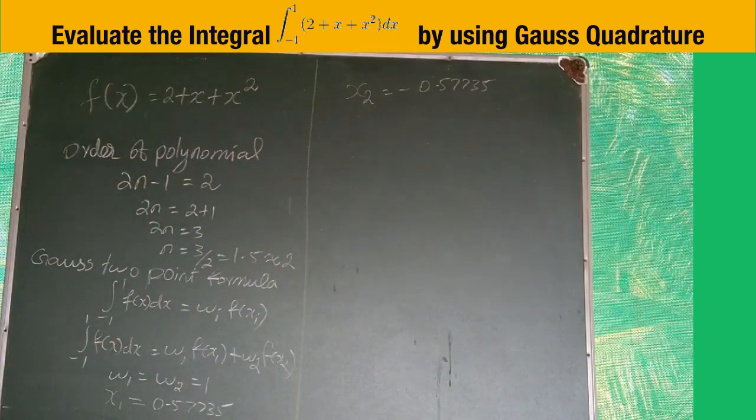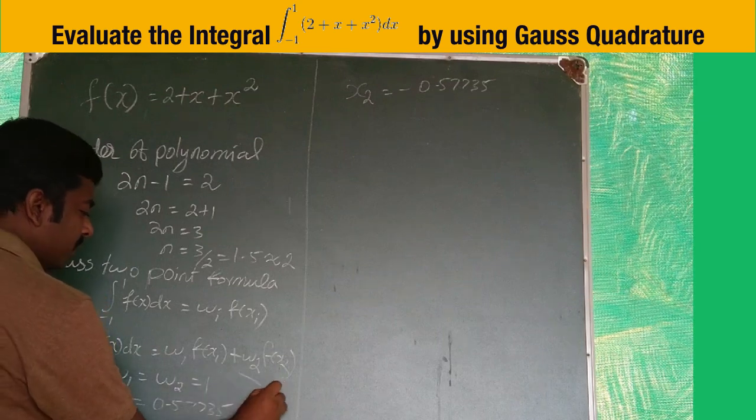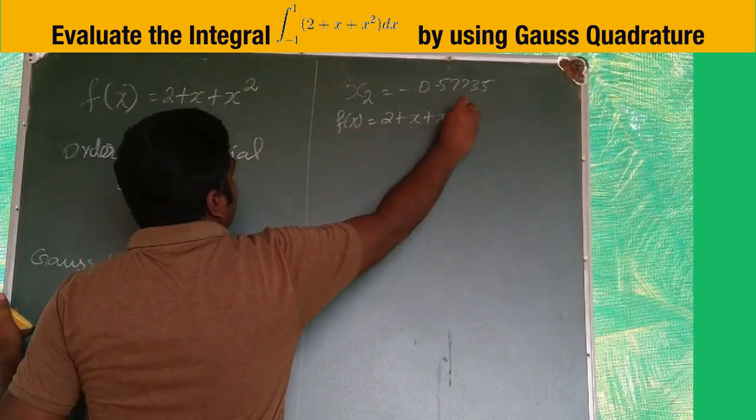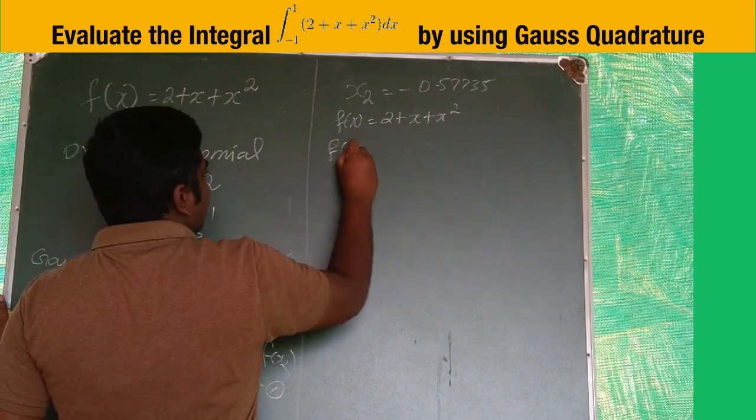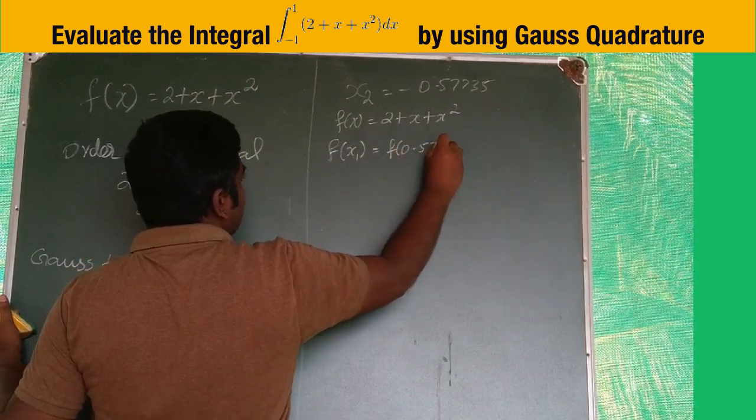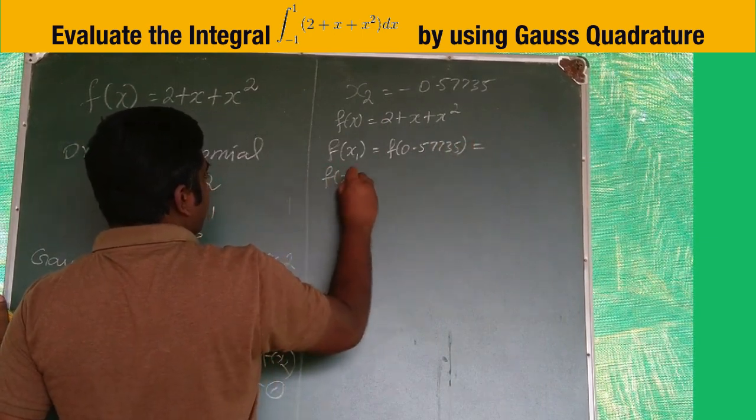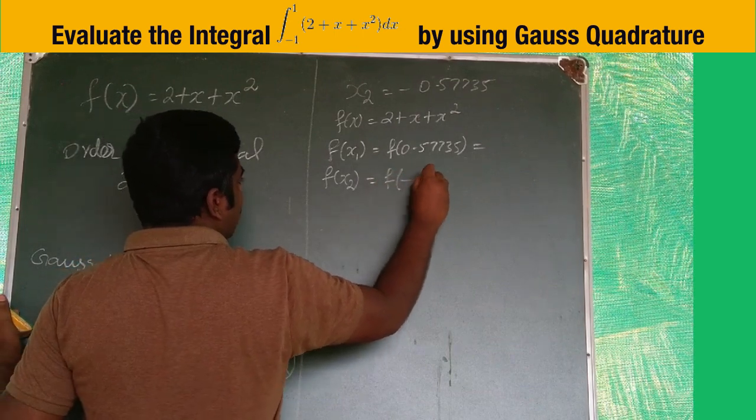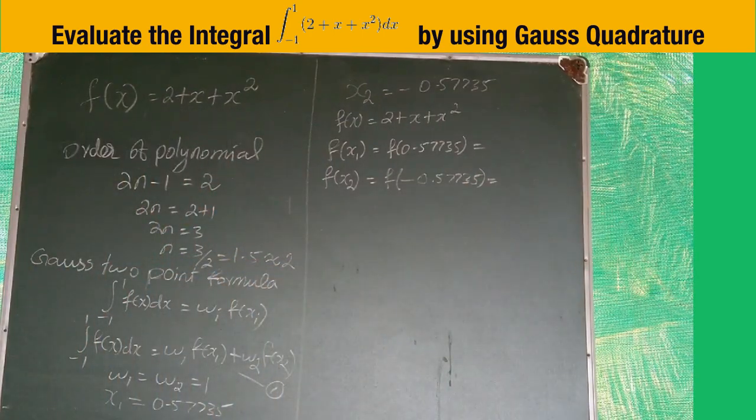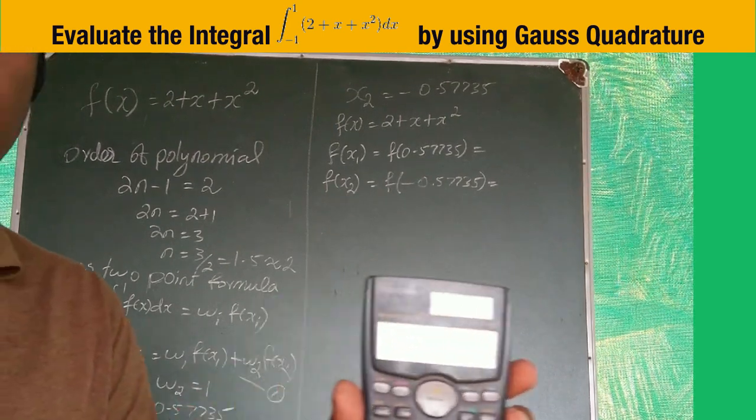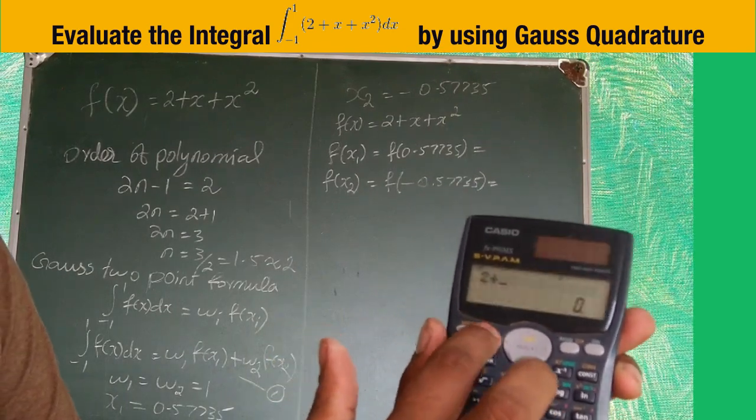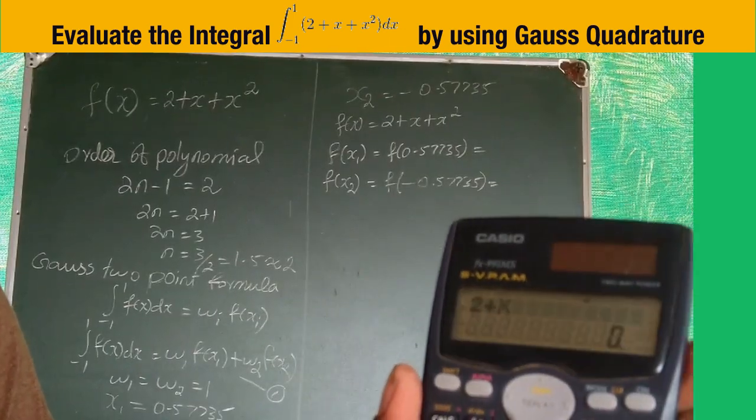Substitute these values into f(x). We have f(x1) = f(0.57735) and f(x2) = f(-0.57735). Using calculator, first we form the formula: 2 + x + x².